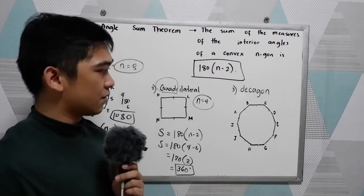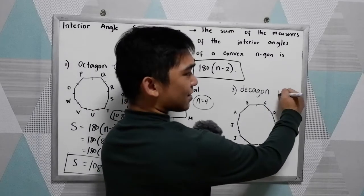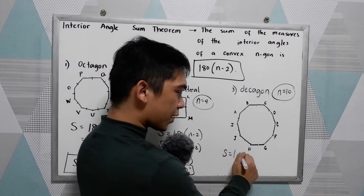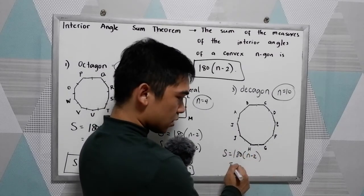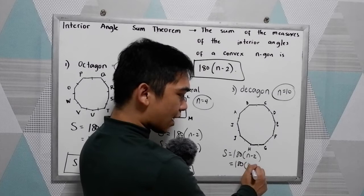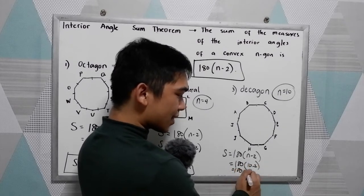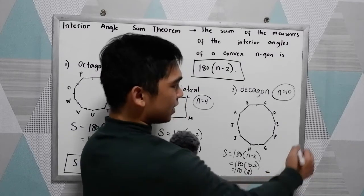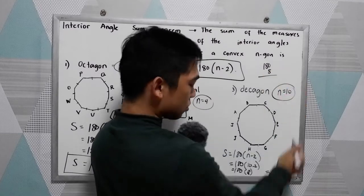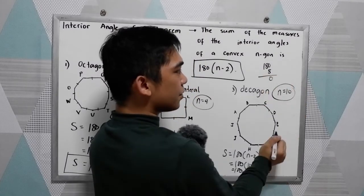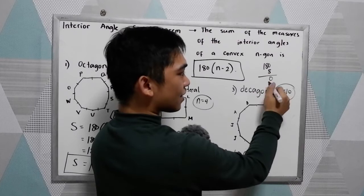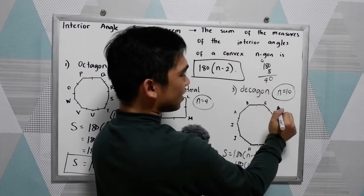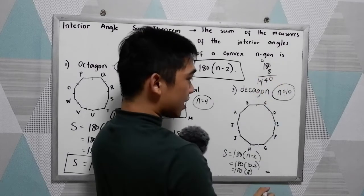Now for the decagon. A decagon has 10 sides, so our N is 10. S is equal to 180 times N minus 2, so 180 times 10 minus 2 is 180 times 8. Computing: 8 times 0 is 0, 8 times 8 is 64, carry 6, then 8 times 1 is 8 plus 6 is 14. So the sum total is 1440 degrees.